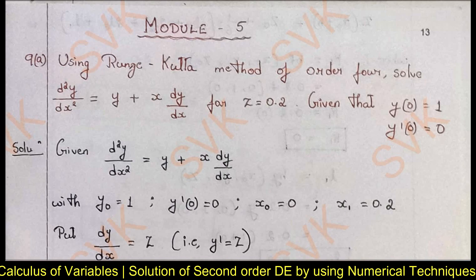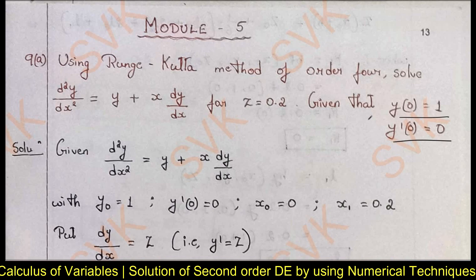Consider question number 9a. Using the Runge-Kutta method of order 4, solve d²y/dx² = y + x(dy/dx) for x = 0.2, given initial conditions y(0) = 1 and y'(0) = 0. I have already discussed the content of the Runge-Kutta method in a separate video. You can go through that video for an in-depth concept. I will provide the link in the description.